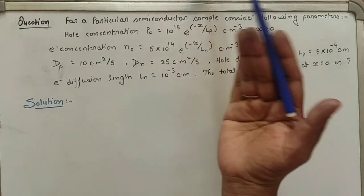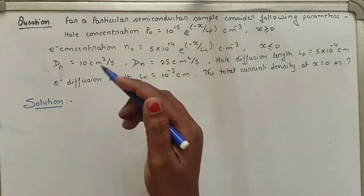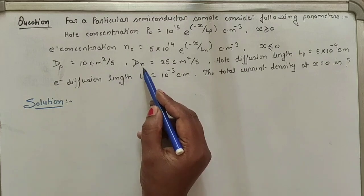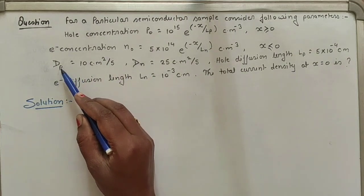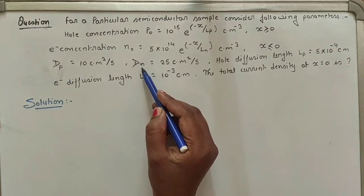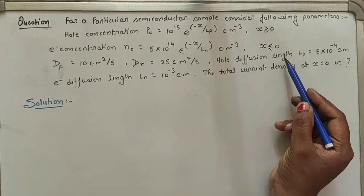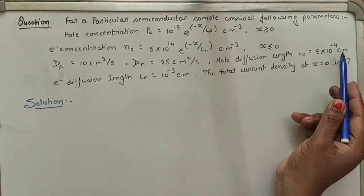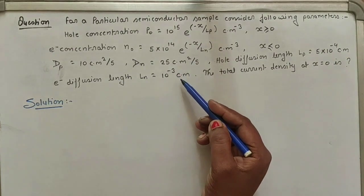So on the positive side (x ≥ 0), we have hole concentration, and on the negative side (x ≤ 0), we have electron concentration. DP and DN are also given: DP is the hole diffusion coefficient, DN is the electron diffusion coefficient. Hole diffusion length LP is 5 into 10 to the power minus 4 cm, and electron diffusion length LN is 10 to the power minus 3 centimeter.